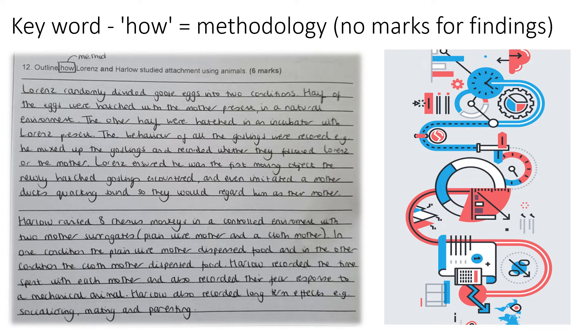Another question that trips pupils up is the word 'how.' If we look at this question — outline how Lorenz and Harlow have studied attachment using animals — if a question asks you for how, circle it straight away and write the word 'method' or 'methodology' above it. Because only methodology points will get you marks in this sort of question; you will get no marks for any findings. Looking at the bottom paragraph about Harlow, it talks about the two conditions, the wire and cloth mother, recording time spent with each, fear responses, and long-term effects recorded. As you can see in both paragraphs, there are no findings at all — it is all linked to the methodology of Lorenz and Harlow.